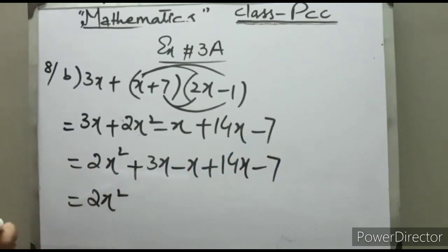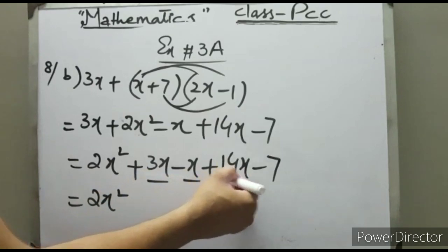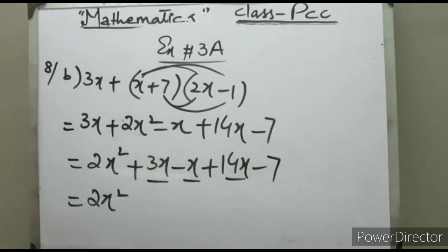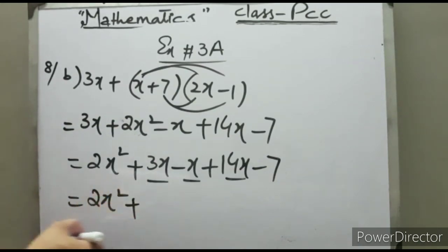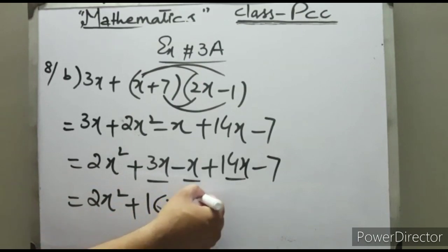Students, you can see these three terms are like terms because every term contains a variable x. So this will become 2x² + 16x - 7. This is the final answer of this expression.